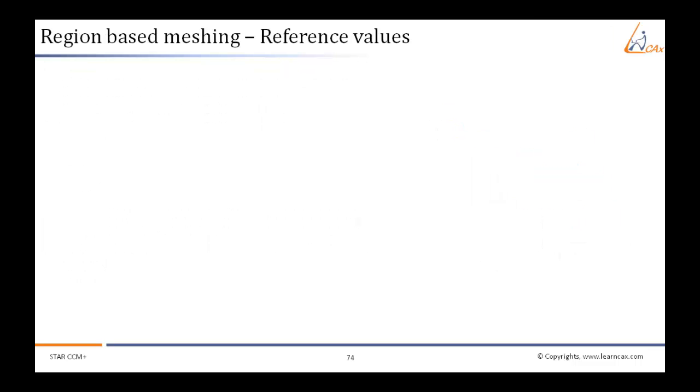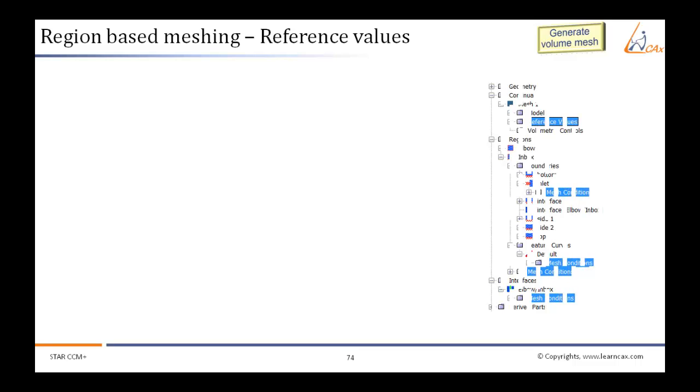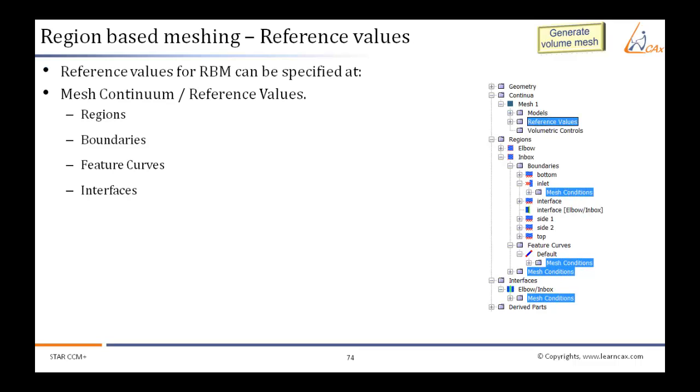Let us see reference values settings for region-based meshing. Reference values for RBM can be specified by going to Mesh Continuum, then Reference Values. These can be given for regions, boundaries, feature curves, and interfaces.